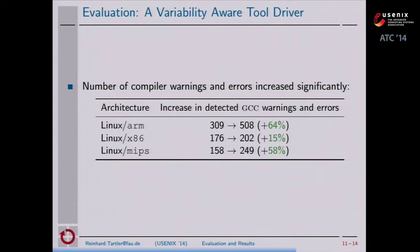The result of our evaluation shows a significant increase of compiler warnings and errors. For Linux ARM, we observe 64% more compiler diagnostics. For x86, we see 15%, and on MIPS, 58%. In the paper, we describe and explain why this number differs so much across various architectures.